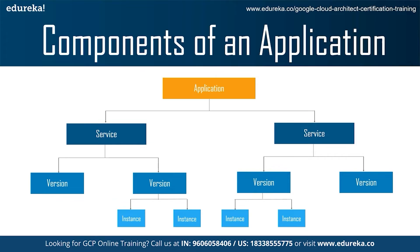Each App Engine application includes at least one service — the default service — which can hold many versions depending on your app billing status. The following diagram illustrates the hierarchy of an App Engine application running with multiple services. In the diagram, the app has two services that contain multiple versions and two of those versions are actively running on multiple instances.